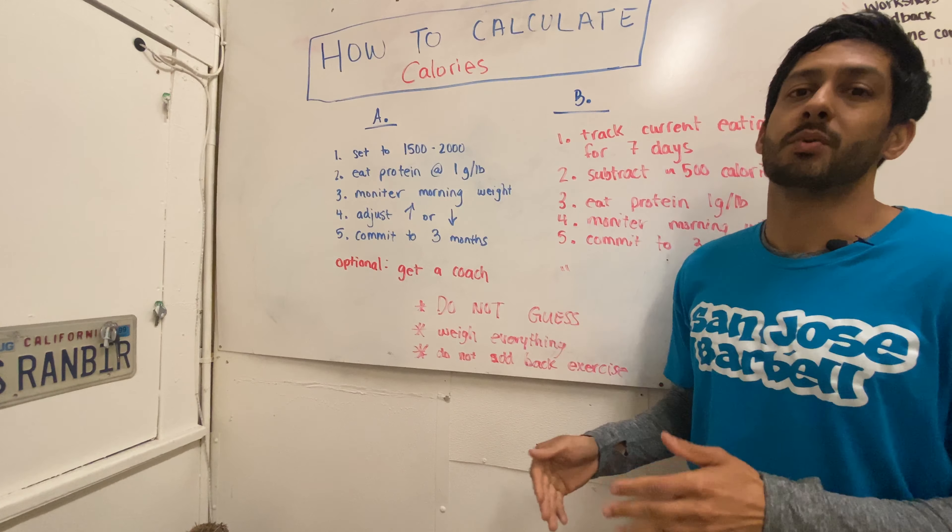Starting is more important than finding the perfect number. Once you start and become consistent and accurate in tracking your food, you can adjust up and down and know what's going to happen with certainty. People who don't begin because they're too busy trying to find the perfect number or ratio never start. It's better to pick a number, start, monitor what happens, and then adjust.